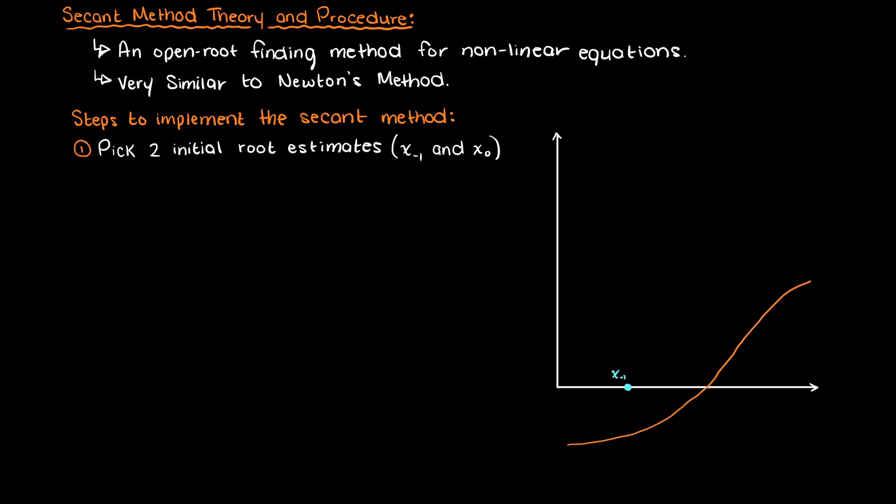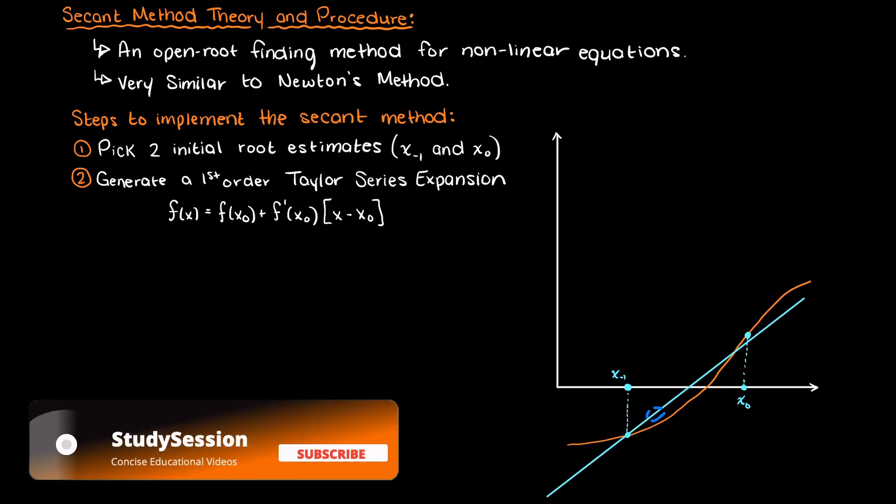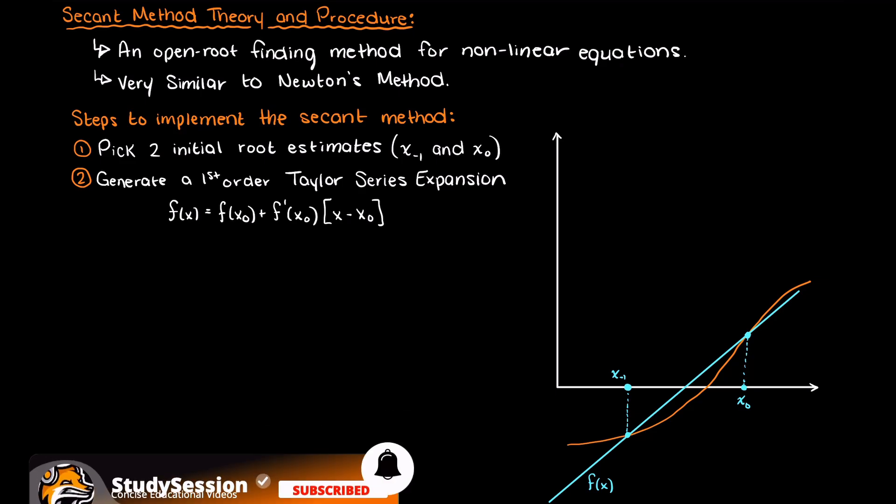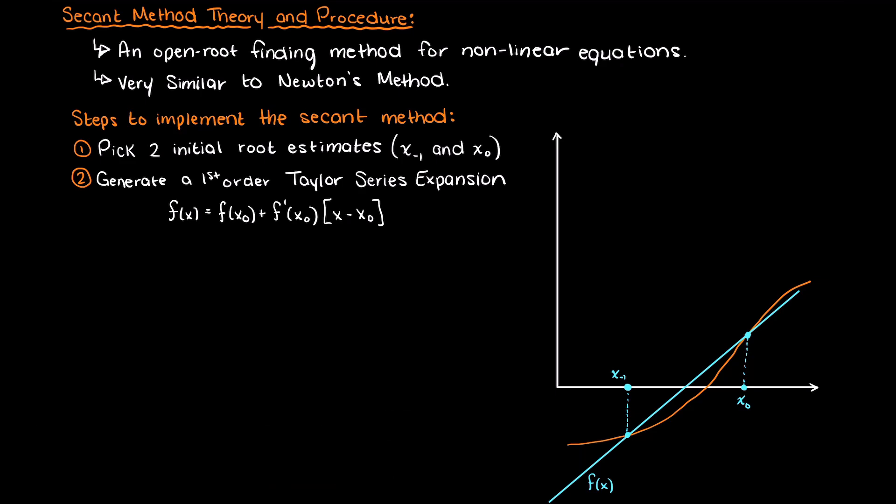Moving into step 2, we need to generate a first order Taylor series expansion to approximate a function for our secant line. Just as a quick reminder, we use the Taylor series expansion to approximate a continuous function as a polynomial, which is great as the derivative of polynomials are very easy.